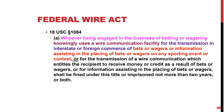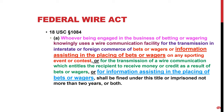There is also a prohibition for the transmission of a wire communication which entitles the recipient to receive money or credit as a result of a bet or wager, and again information assisting in the placement of bets or wagers. That information assisting language does show up more than once.